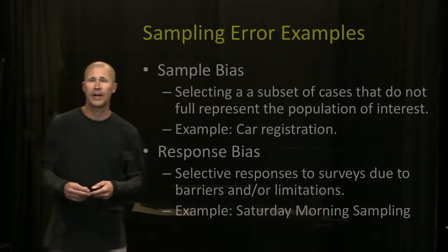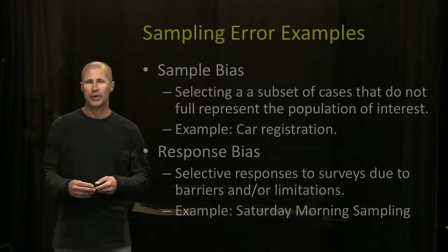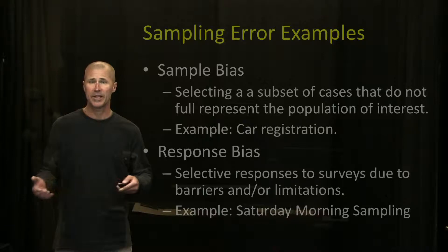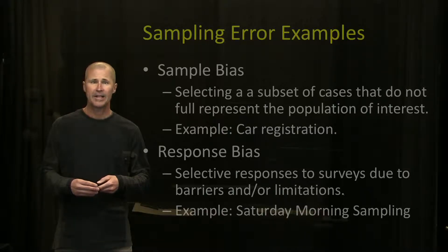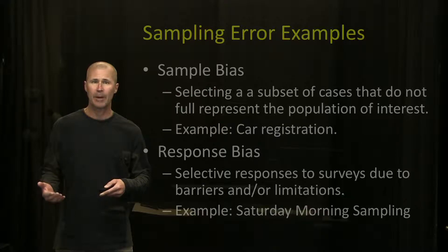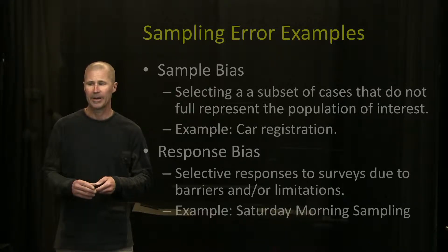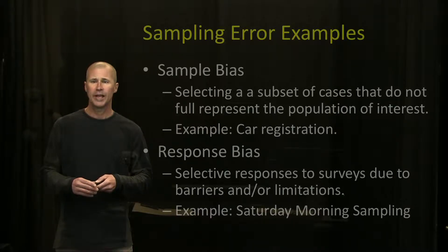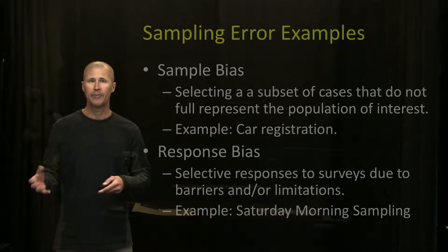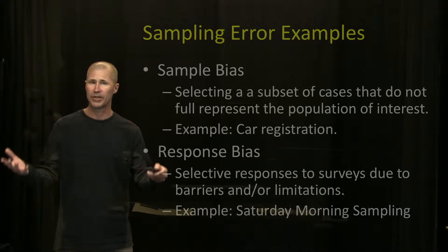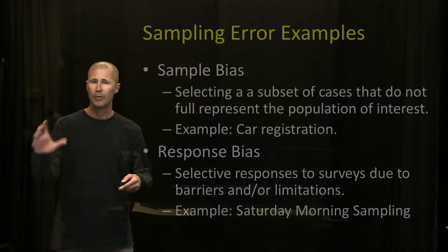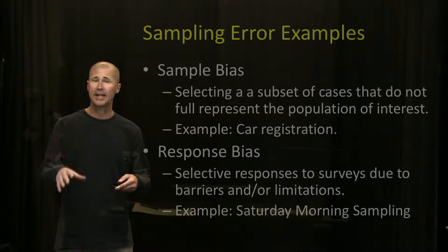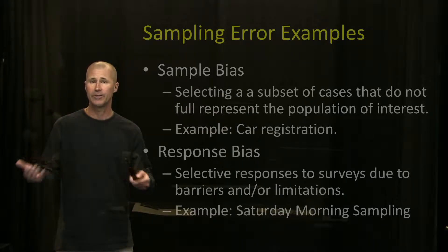Sampling bias is one of the areas where a researcher could make a mistake and increase the sampling error. Sampling bias is selecting a subset of cases that do not fully represent the population of interest. For example, this happened many years ago in an election. What they did was take a random sample of people who had their cars registered — a random sample from car registration records — and they contacted these people and asked them who they were going to vote for.